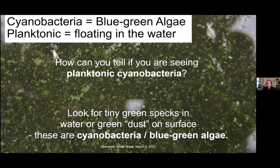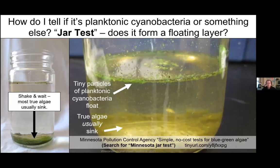There are other things you can do to get a better idea if you're seeing cyanobacteria — that's called the jar test. The Minnesota Pollution Control Agency has a nice document on this; you can search for 'Minnesota jar test' to find it. If you've got some green lake water with small particles, put it in a jar, cap it, shake it up, and let it sit for about an hour. Planktonic cyanobacteria tend to float and form a scum on the surface, while true algae tend to sink to the bottom.